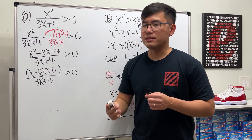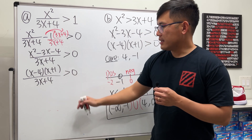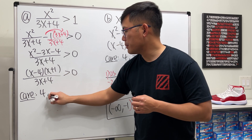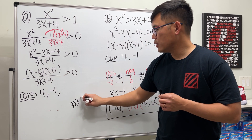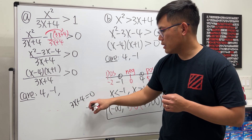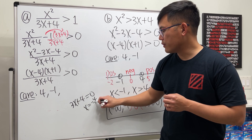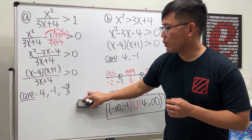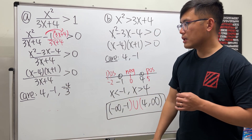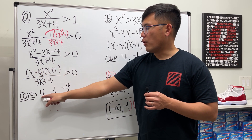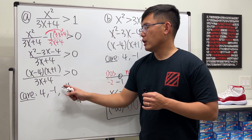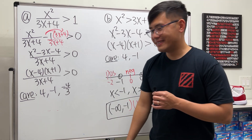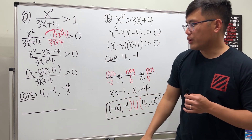Factor the numerator: (x - 4)(x + 1) / (3x + 4) > 0. Now we have three factors to consider. From (x - 4) we care about 4; from (x + 1) we care about -1; from (3x + 4) = 0 we get x = -4/3. We do not include any of these — no equal sign, and -4/3 can never be included since it's in the denominator.